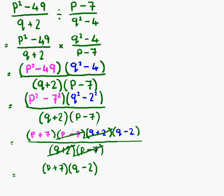We've cancelled, we've scored out both things on the denominator, which leaves us with 1. So we have p plus 7 multiplied by q minus 2 over 1.